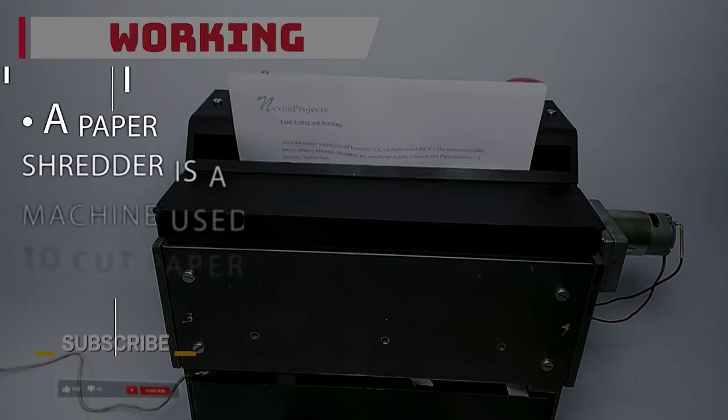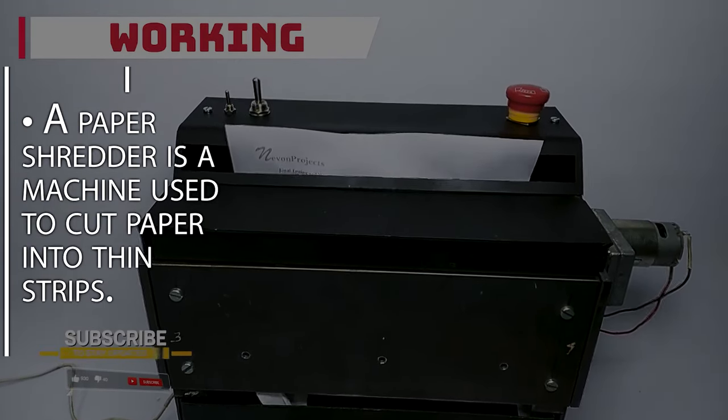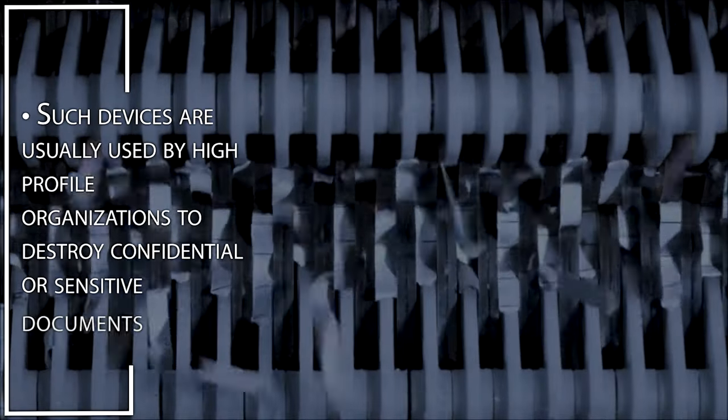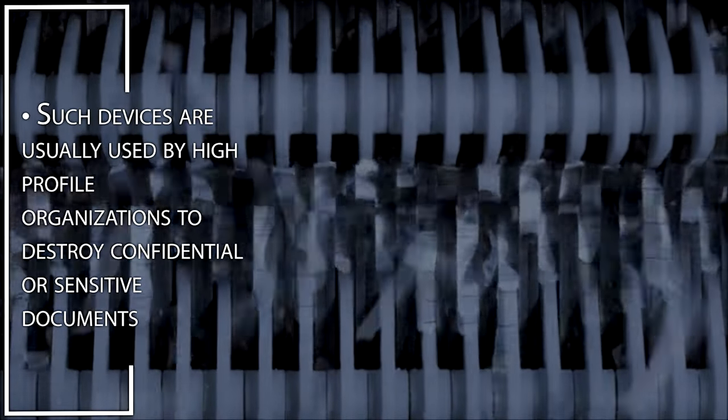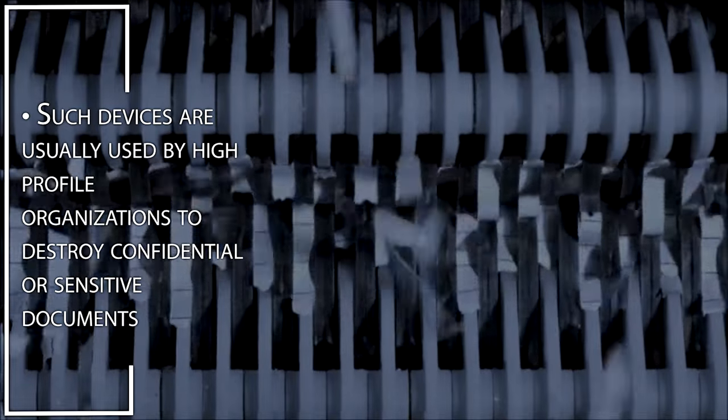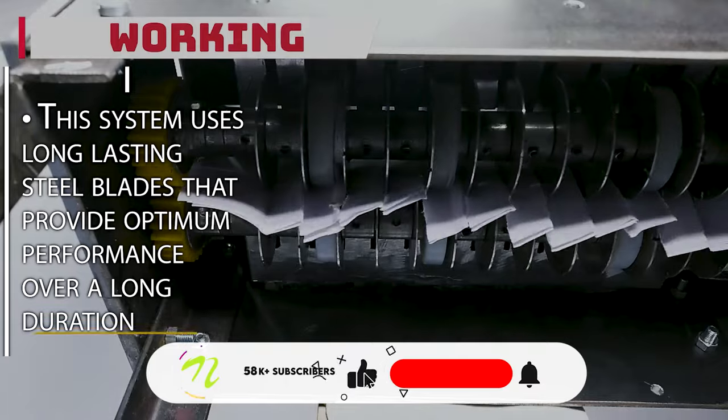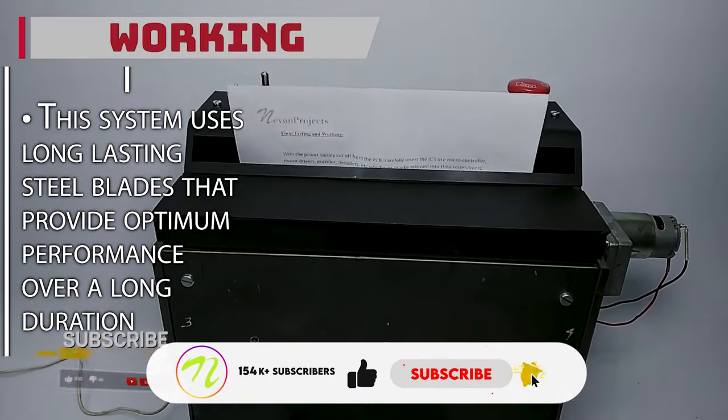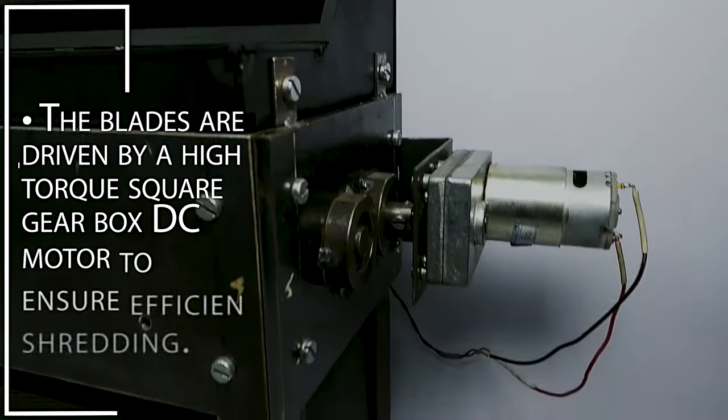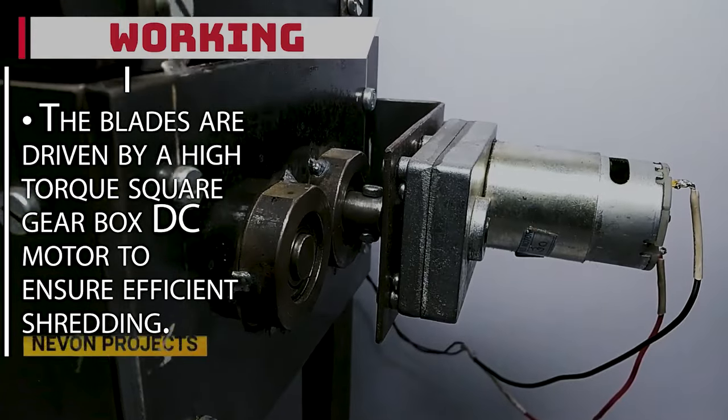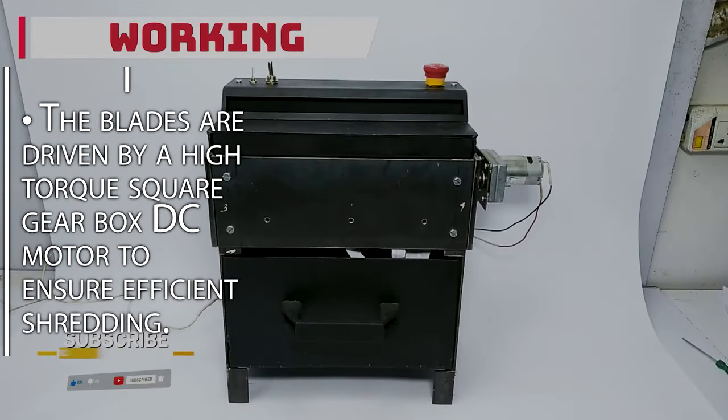Paper Shredder. A paper shredder is a machine used to cut paper into thin strips. Such devices are usually used by high-profile organizations to destroy confidential or sensitive documents. This system uses long-lasting steel blades that provide optimum performance over a long duration. The blades are driven by a high-torque square gearbox DC motor to ensure efficient shredding.